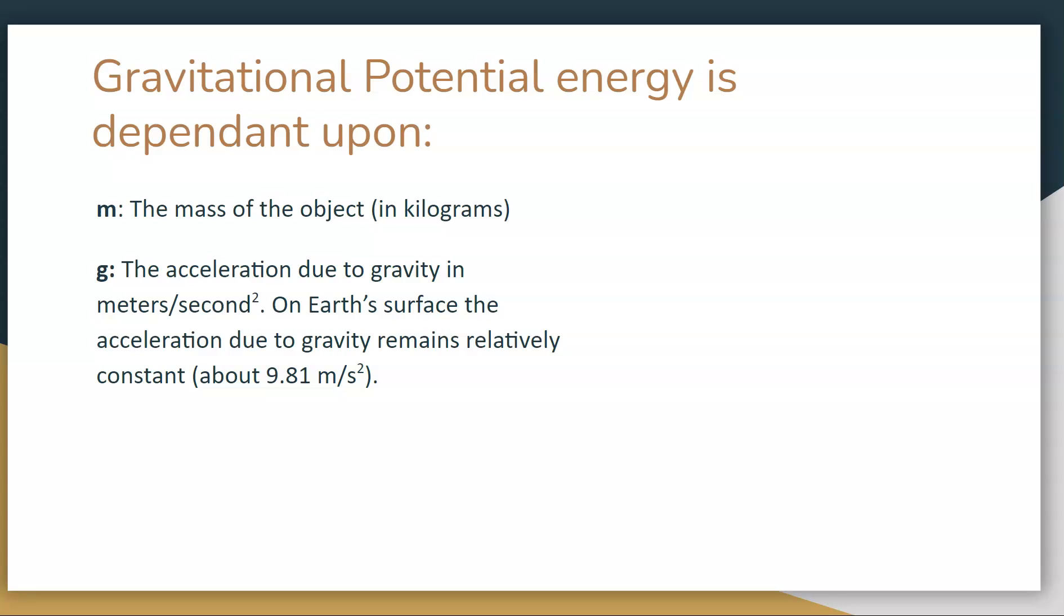On our surface, the acceleration due to gravity remains relatively constant, so we will always use 9.81 meters per second squared for g in this equation. H stands for height, which makes sense. We've used that before. The height of an object off a surface, and this one is in meters.